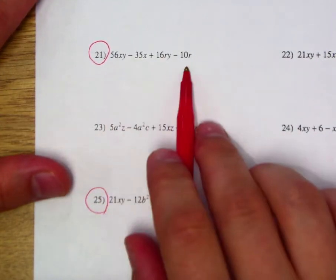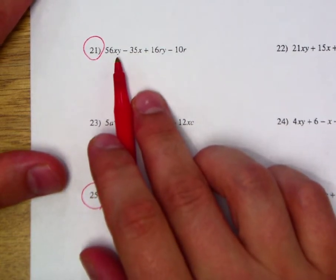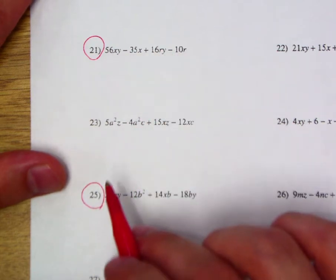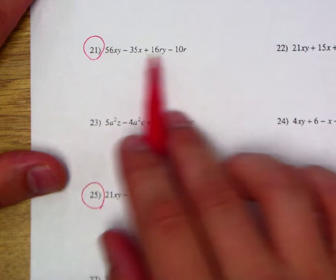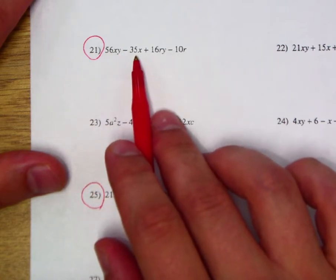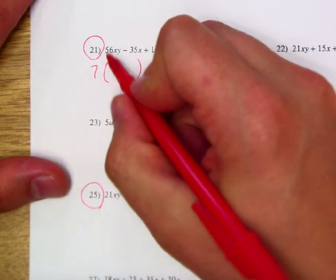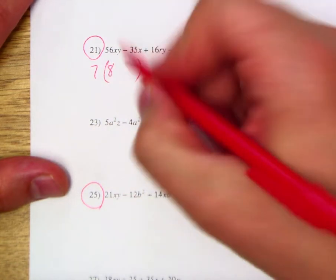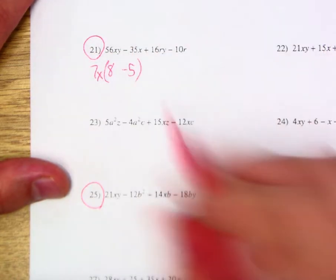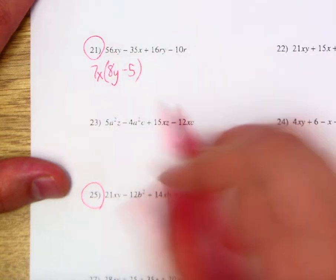So let's go ahead and try a couple more here on the back. 21 here. This is a little bit tricky. This is where all of a sudden we're looking at these different variables as well. So we've got 56xy - 35x + 16ry - 10r. Well, once again, let's see if we can find some stuff they have in common. 56 and 35, I can factor out 7 of both of those. So if I start off by factoring out 7, I would be left with 8 of those, and I would be left with negative 5 of these. What else do they have? Well, an x. So 7x times the quantity 8y minus 5.